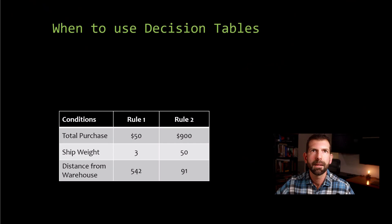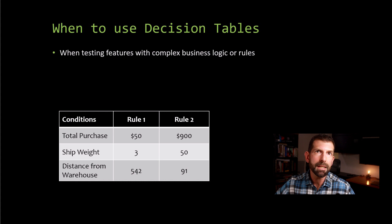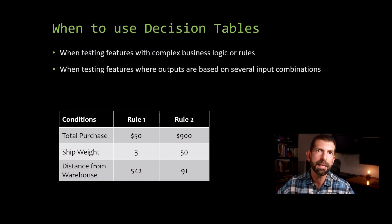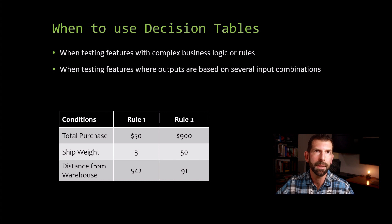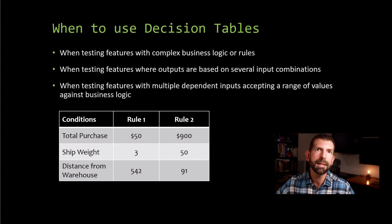Decision tables can be very useful depending on what kind of feature you're testing. They are useful when testing features with complex business logic or rules, when testing features where outputs are based on several input combinations, or when testing features with multiple dependent inputs accepting a range of values against business logic.